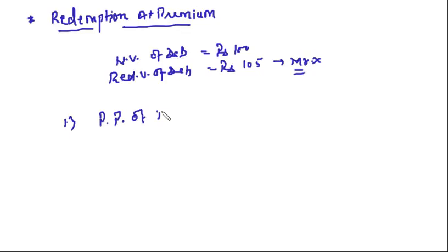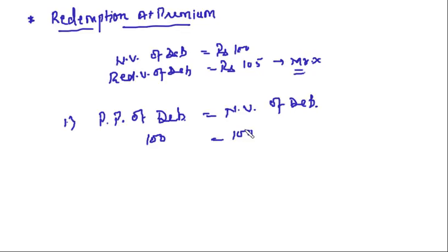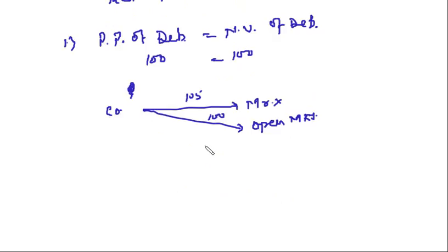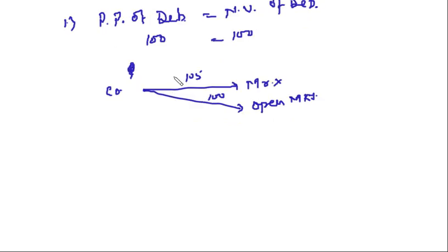Case 1: if the purchase price of the debenture in the open market is equal to the nominal value — that is 100 rupees. You might say it is a no profit no loss situation, but there is actually a profit here. You have to pay Mr. X, the debenture holder, 105 rupees. But if you go to the open market, your own debenture is available at 100 rupees — the face value. So the company is having a gain to the extent of the premium, that is 5 rupees.